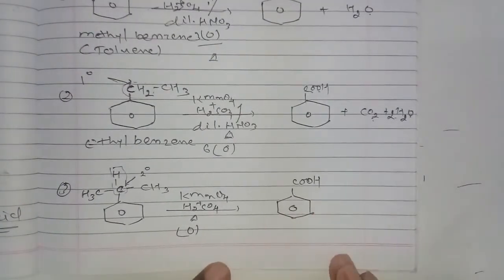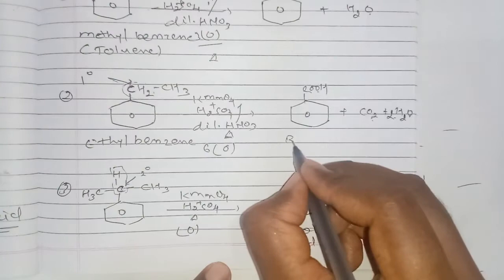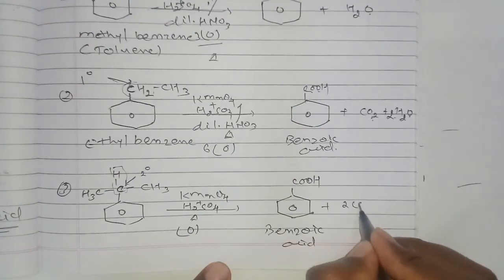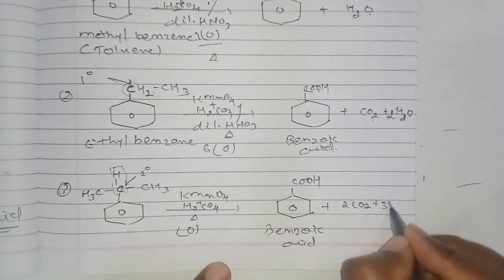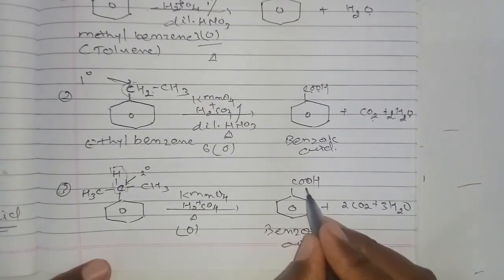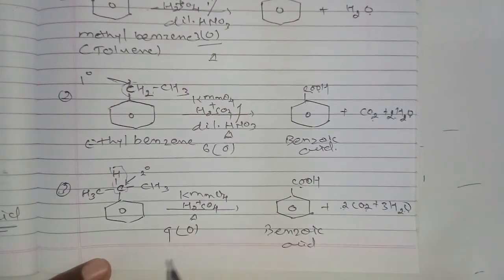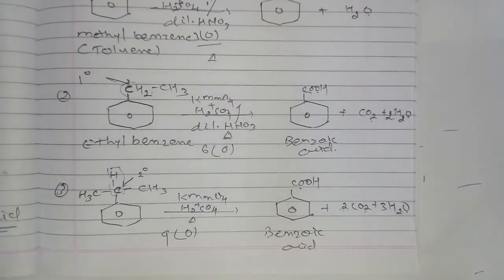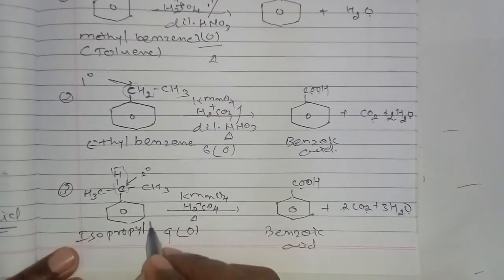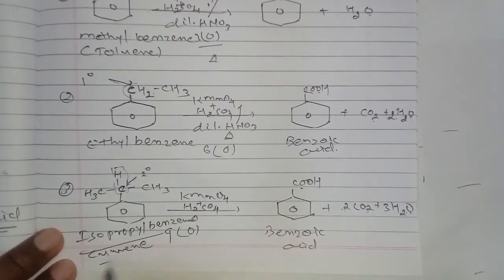The product is benzoic acid, along with 2 moles of carbon dioxide and 3 moles of water. Six oxygen atoms are involved. The starting material is isopropyl benzene, also known as cumene. The carbon attached to the benzene ring — the secondary carbon of the isopropyl group — is converted to the carboxylic acid group.